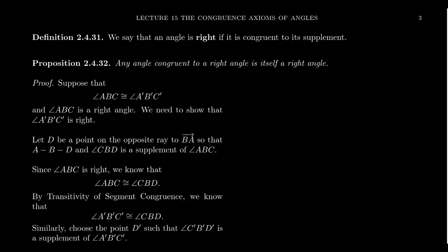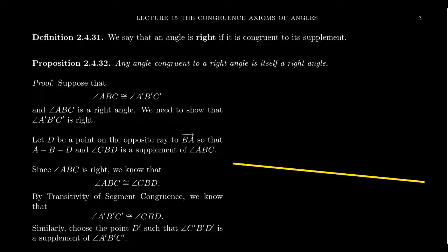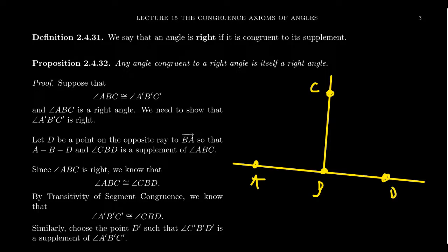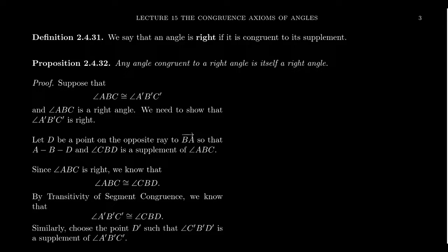We say that an angle is right if it is congruent to its own supplement. We don't have any notion of a 90 degree angle or angle measure whatsoever in congruence geometry. If we have some angle ABC, its supplement would be DBC. If the angle is congruent to its supplement, we call that a right angle. We denote a right angle using a little square icon, to suggest the corner of a rectangle — after all, the word rectangle itself means right angle.